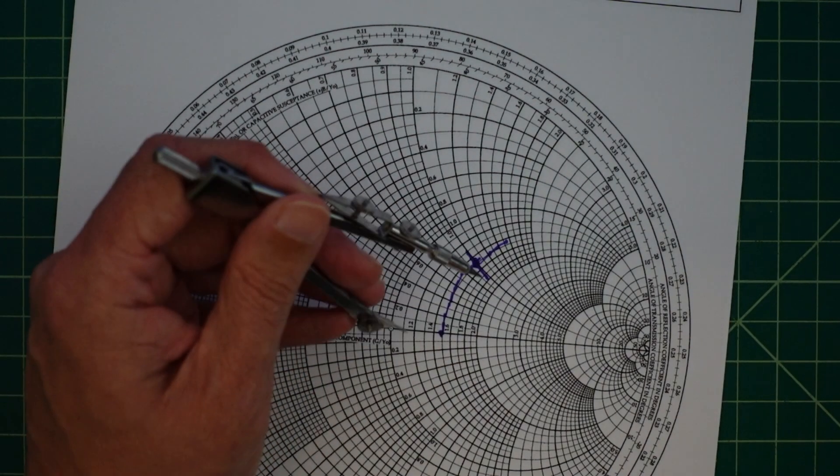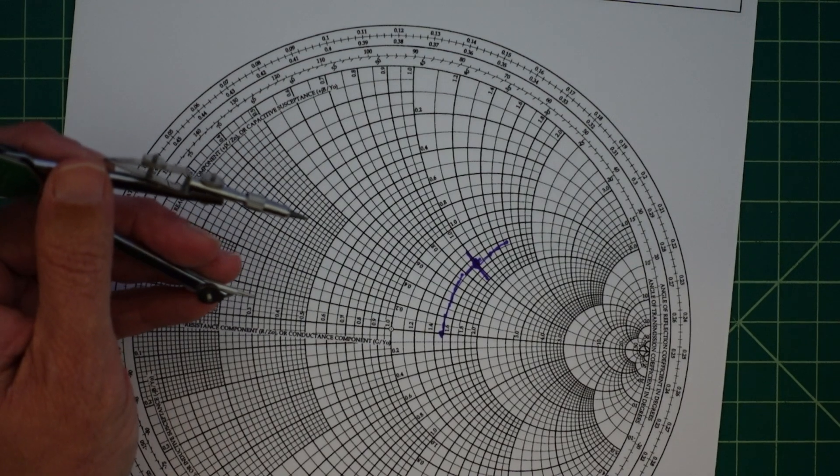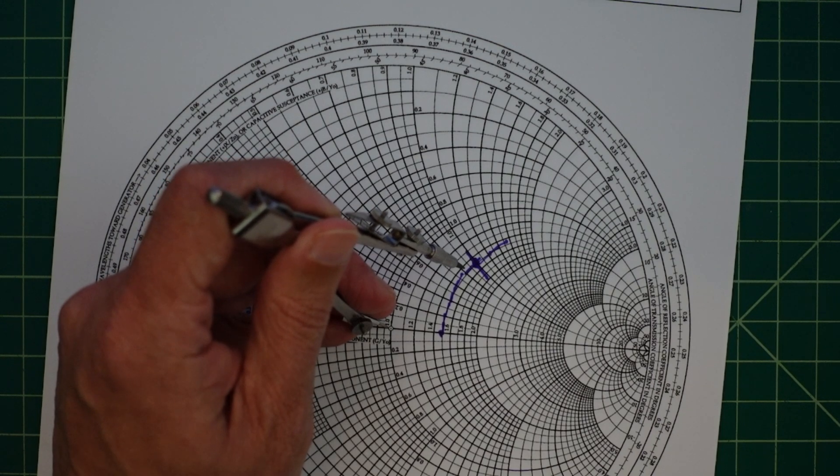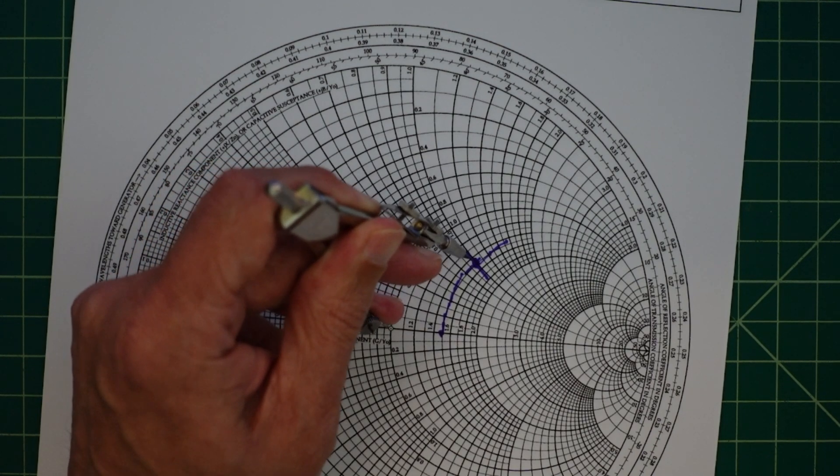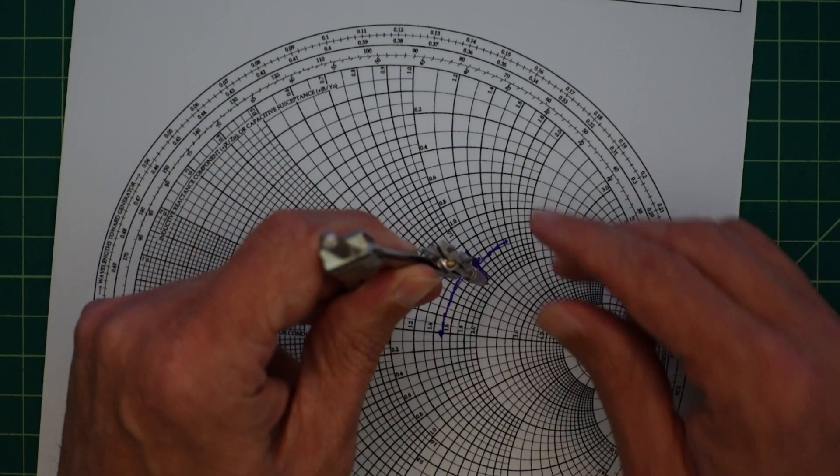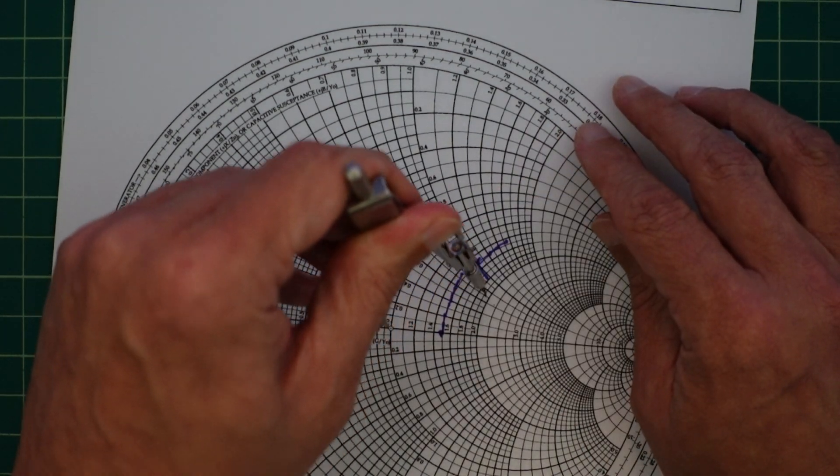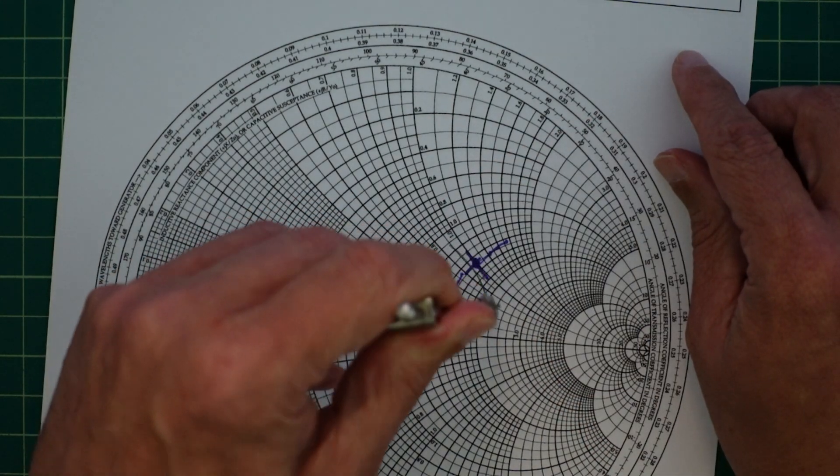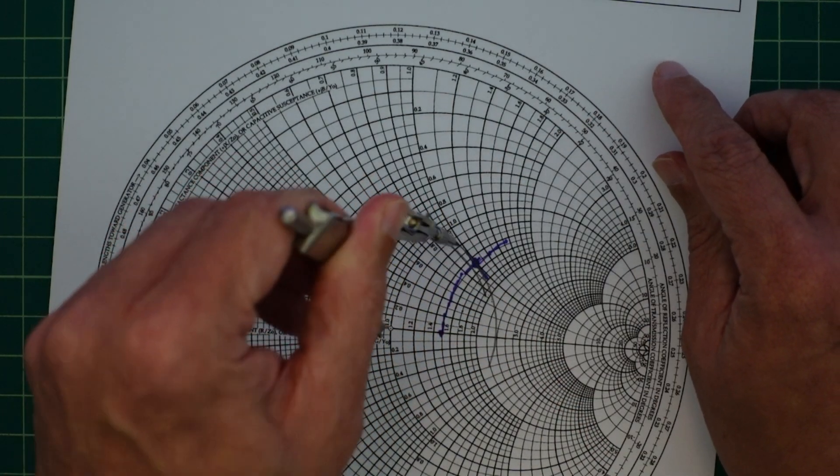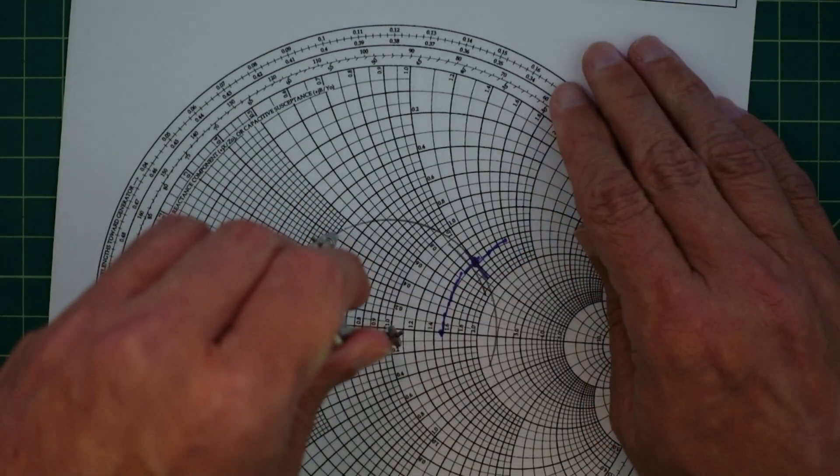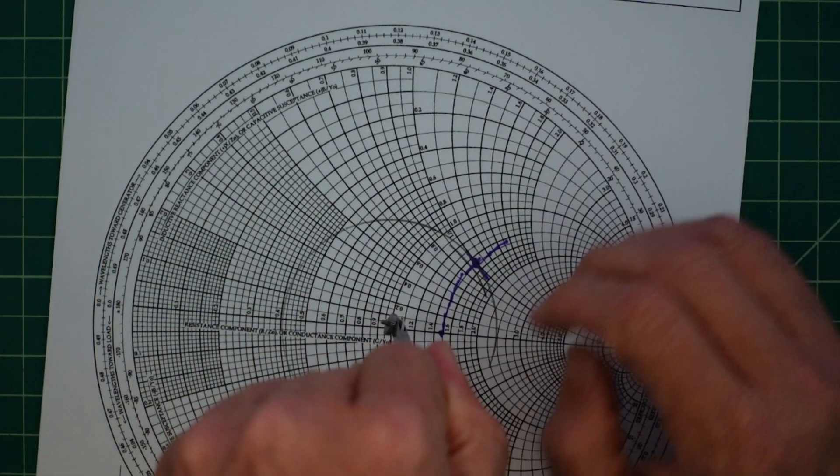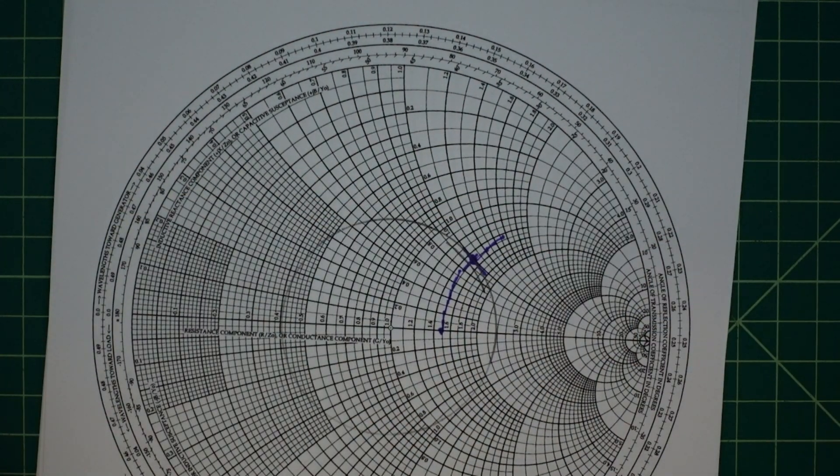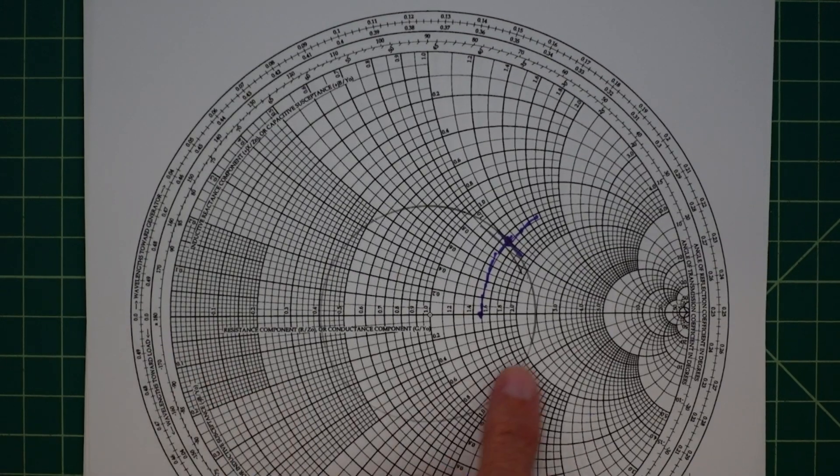The next thing that we want to do is we want to figure out our SWR. We're going to put that on our system impedance and then we're going to put that on our normalized impedance. Then we are just going to draw our circle and that would be our SWR circle.